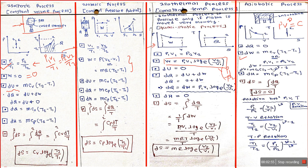Change in internal energy (ΔU) uses the same formula for isochoric, isobaric, and adiabatic processes. For isothermal, the same formula applies but since t1 equals t2, ΔU becomes zero. Similarly, enthalpy is mcp·ΔT for all processes, but for isothermal the change in temperature is zero, so both internal energy and enthalpy become zero. For adiabatic, the formula is also mcp·ΔT.